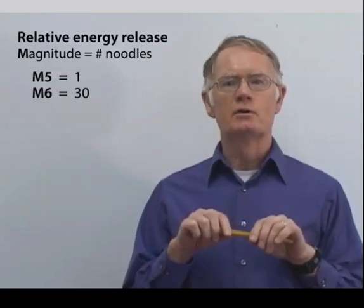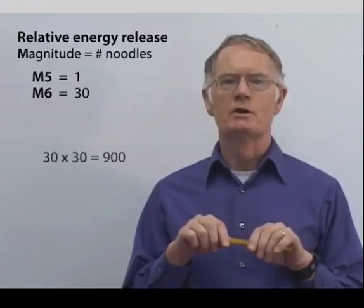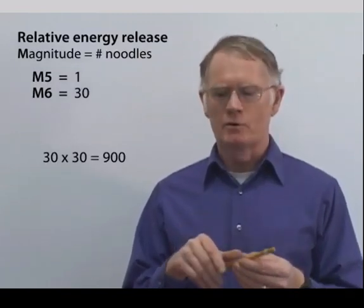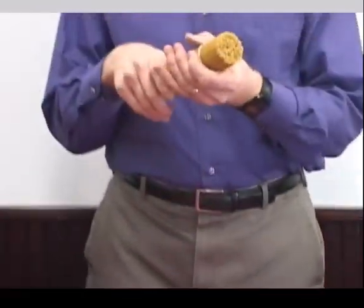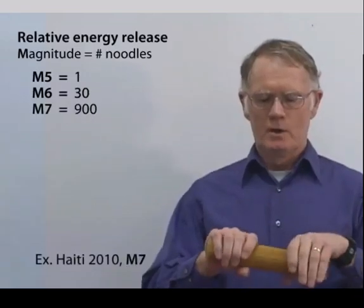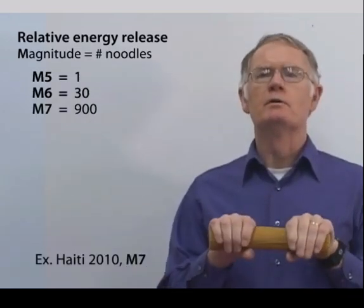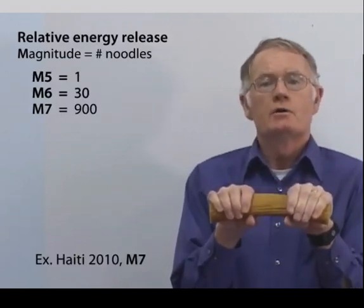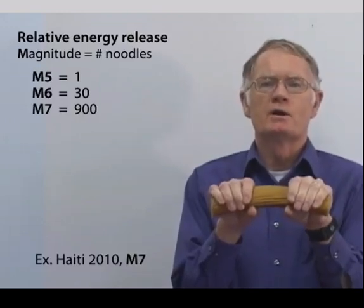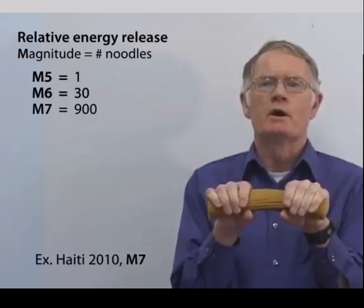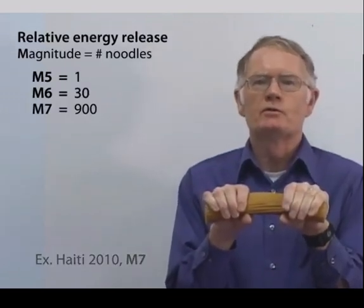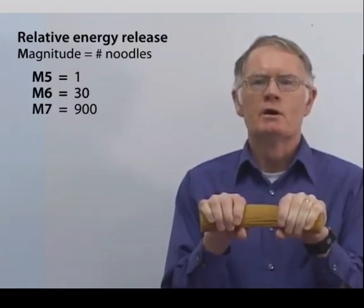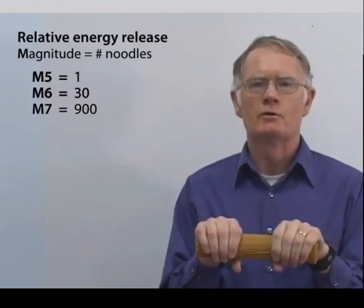To go then to a magnitude 7 earthquake, such as the Haiti earthquake of January 2010, I'd have to take the 30 and multiply by another 30, to get a bundle of 900 strands of spaghetti. When I get to a bundle of 900 strands, I really have to bend it fairly hard and put quite a bit of force on it. It gives us a good physical feeling for the comparison of the amount of energy released in a magnitude 7 earthquake compared to the single strand, which is a magnitude 5 earthquake.